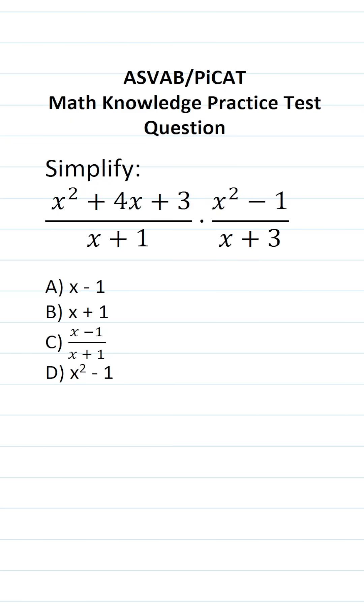This math knowledge practice test question for the ASVAB and PiCAT asks you to simplify (x² + 4x + 3)/(x + 1) times (x² - 1)/(x + 3). In other words, we're multiplying these two rational expressions together. On the ASVAB and PiCAT, you're not given a reference sheet or calculator.